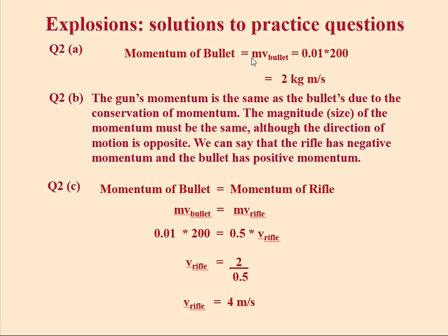The momentum of the bullet is straightforwardly mass times velocity, so the mass of the bullet times the velocity of the bullet. We substitute in 0.01 multiplied by 200, which gives us 2 kilograms meters per second.